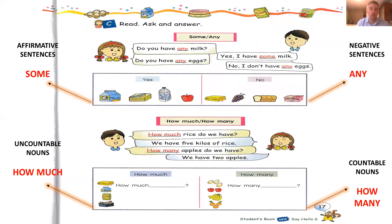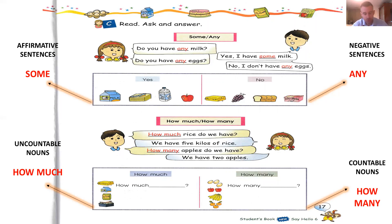Now open your book to page 17. Here we have 'some' and 'any': 'Do you have any milk? Yes, I have some milk. Do you have any eggs? No, I don't have any eggs.' Remember: affirmative sentences use 'some' — yes, I have some milk, some cheese, some water. Negative sentences use 'any' — no, I don't have any butter, any grapes, any bread, any ice cream. If you keep that in mind, you can make the sentences properly.